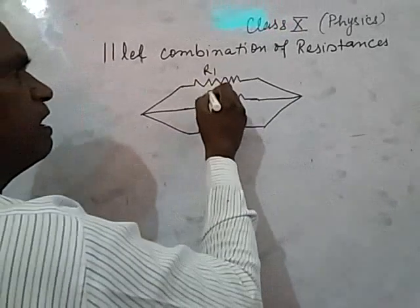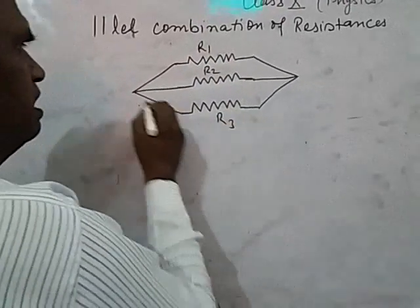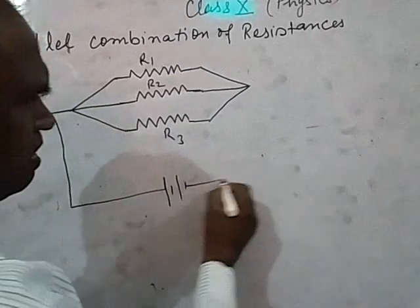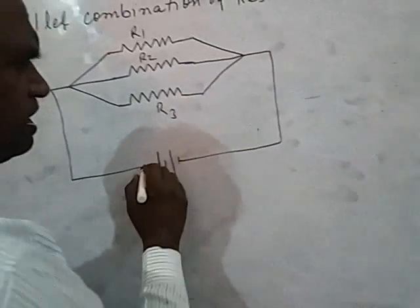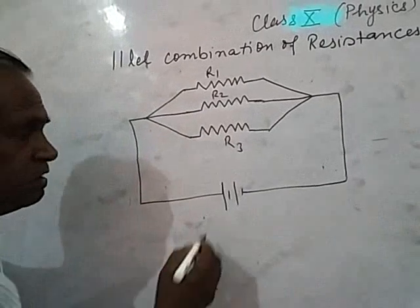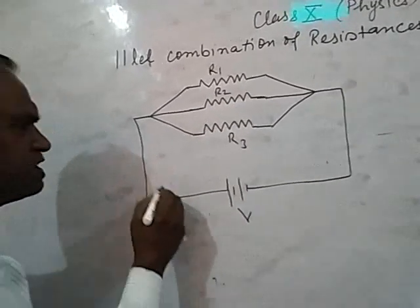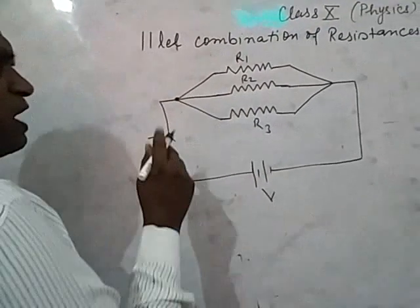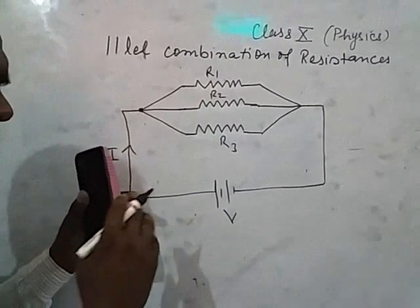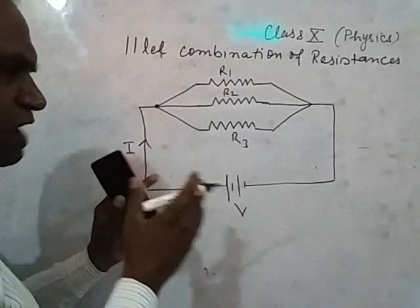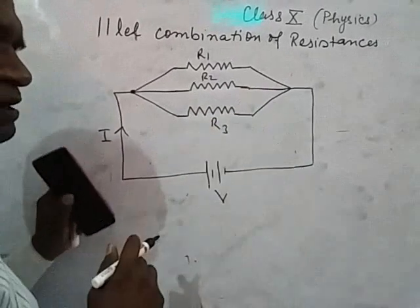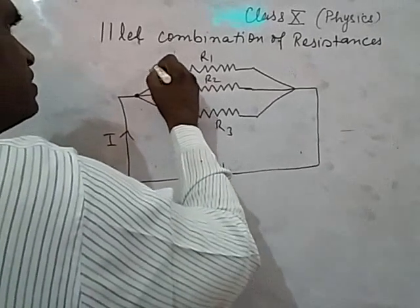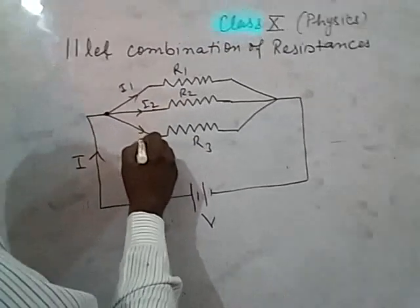If R1, R2, R3 are connected parallel, we can remove this from a battery or a cell. This is the V-volt battery. Here the current is I. When this junction comes, you will know that the current, when we have 3 parts, the current will flow. But in 3 parts the current flow will flow. This will be I1, I2 and I3.